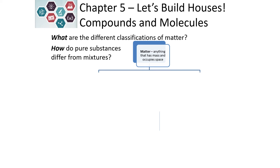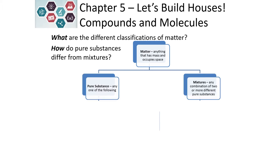When we're trying to classify matter, we can classify it into different groupings. Matter is anything that has mass and occupies space, which is essentially everything around us. We can classify that further into pure substances and mixtures. Pure substances are things that have only one type of component present. Mixtures have a combination of two or more components, and those two or more components are originally pure substances.